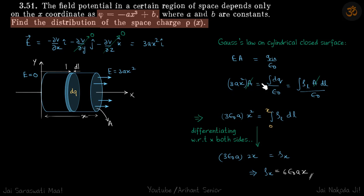So electric field we put 3ax²·A = ∫dq/ε₀, and dq is ρ at this location times volume of this element, so ρ at this location let it be ρ_l and volume of the element is A·dl.